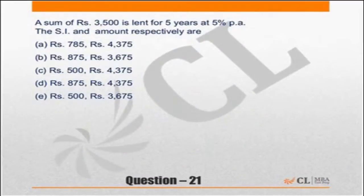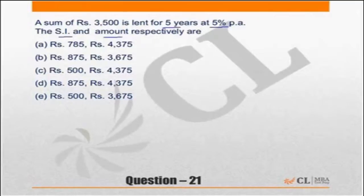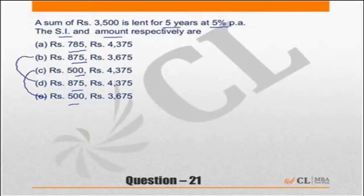The sum of 3500 is lent for 5 years at 5% per annum. Now if you look at the question and the choices: 785, 875, 500, 875, 500. Two of them have 500 and two of them have 875.